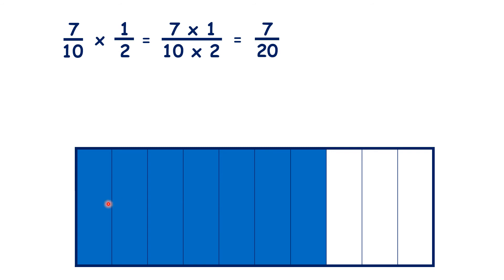Because if we start with 7 tenths, multiplying by a half is the same as finding half of something. So we're dividing each of those 7 tenths in half, giving us 7 20ths as our answer.